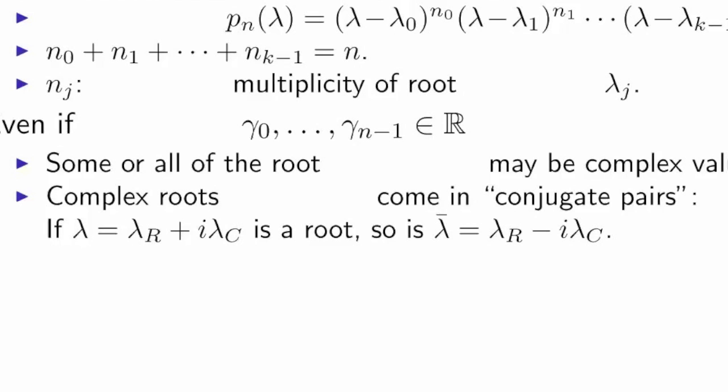If there are complex-valued roots, they come in conjugate pairs, which means that if lambda is a complex value that is a root, then it has a real part and a complex part. If it's lambda sub r plus i times lambda sub c, its conjugate is the same expression except with the plus replaced by a minus, and that's known as the conjugate of that value, in this case, the conjugate of the given root.